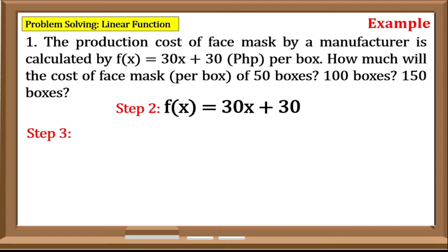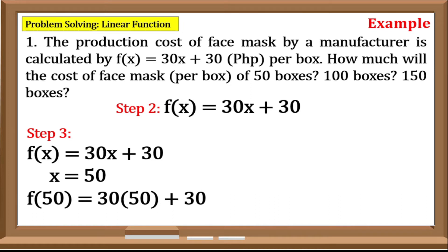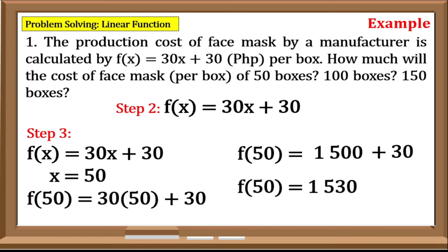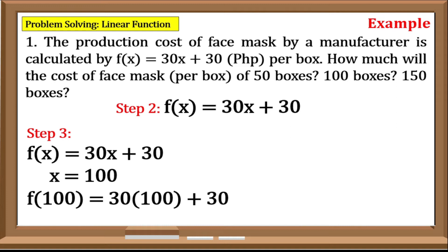Step 3: Evaluate the generated function. We have f(x) = 30x + 30. Our x is equal to 50, so we need to evaluate the given value of x in our function. We have f(50) = 30 times 50, plus 30. Simplify: 30 times 50 equals 1500, plus 30, equals 1530. Now let us have 100 for the value of x. f(100) = 30 times 100, plus 30.